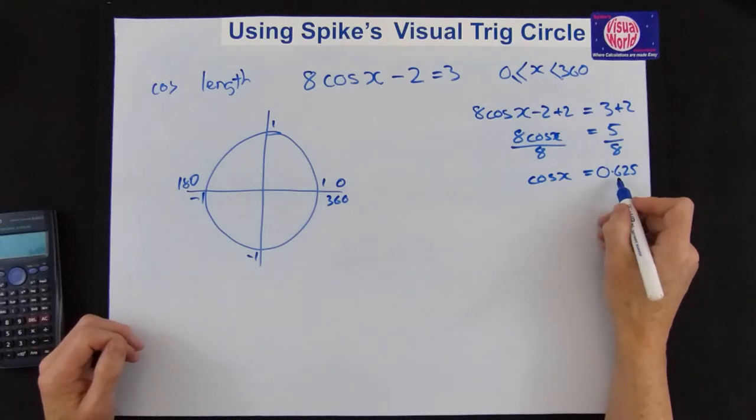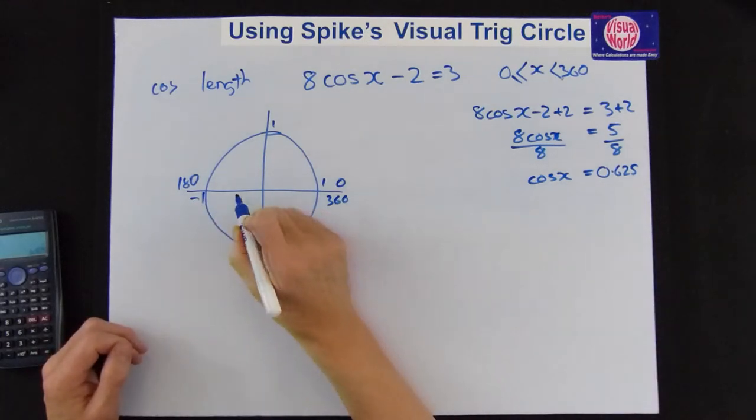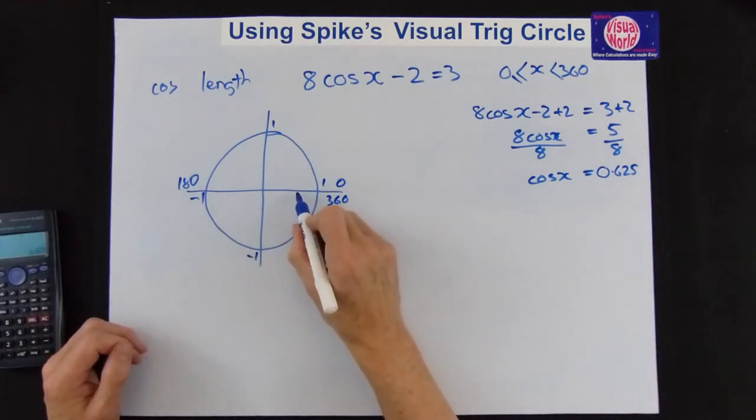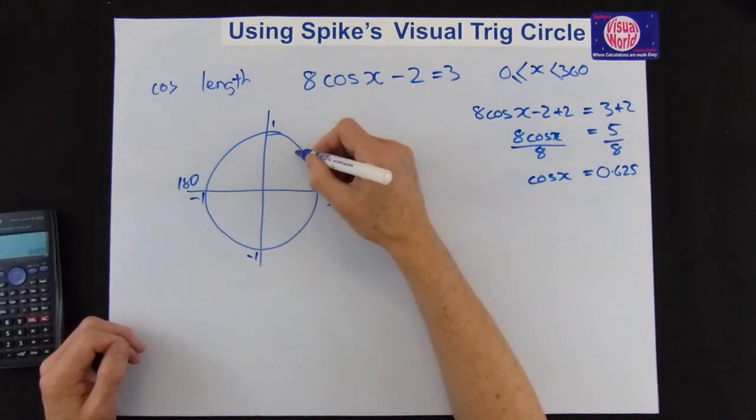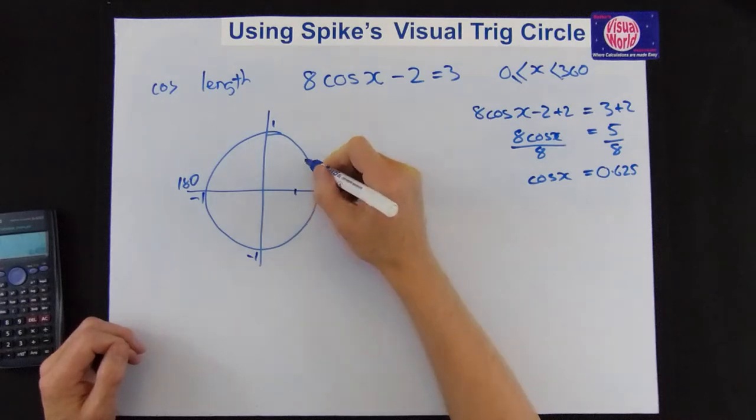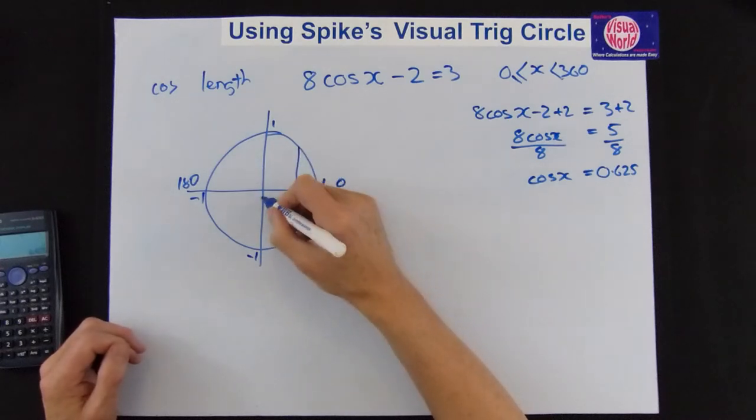And we need a length of 0.625. There's the line there. So the length is positive. It's out there. Remember it's a diagram. It isn't even exact. So I would put it slightly more than half. So it is reasonably right. So it's there. So draw your line through there. And you can see your two values there.